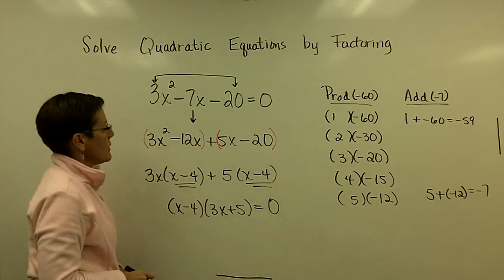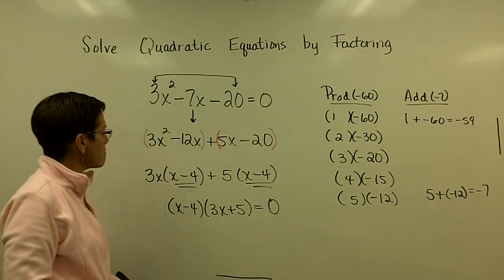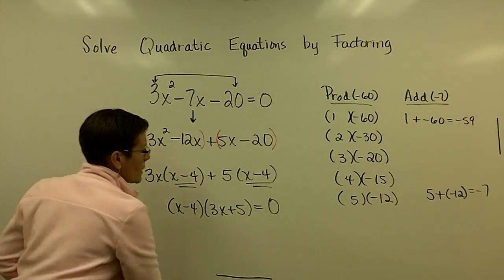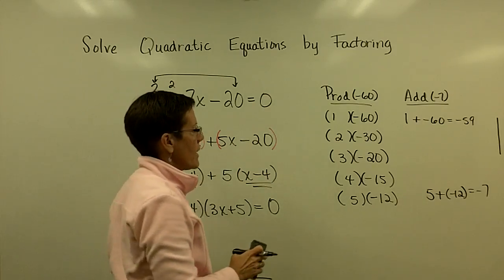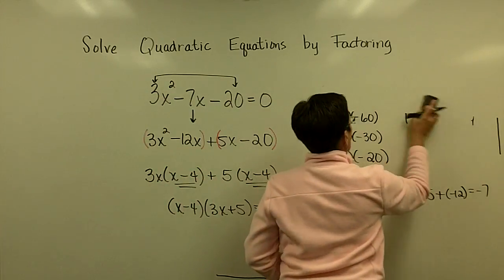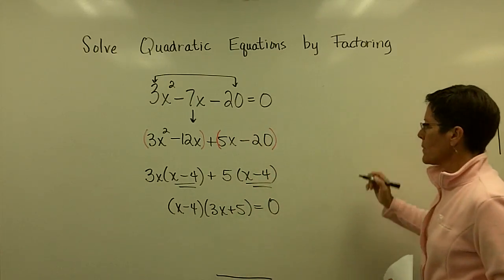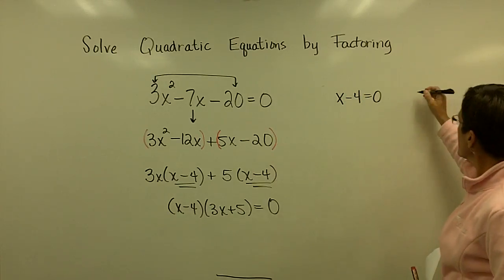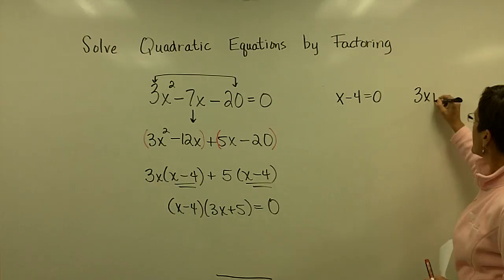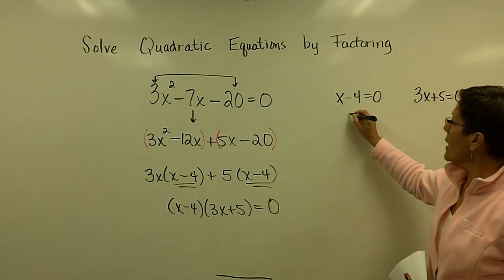I finally have this in its factored form and now I'm ready to use the zero product rule. The zero product rule says to take the factors. They are x minus 4 and set that one equal to 0, and take the 3x plus 5 and set that equal to 0, and then solve these for x.